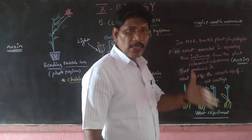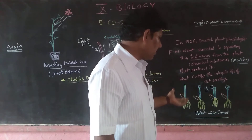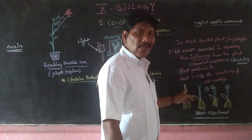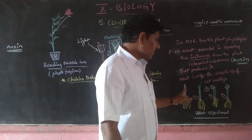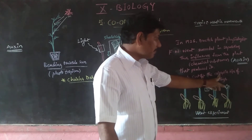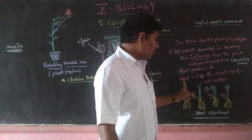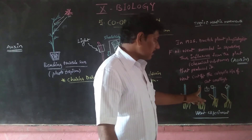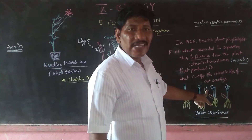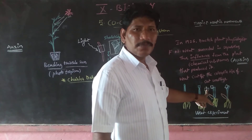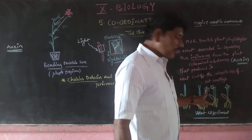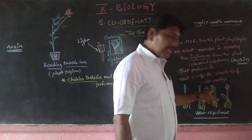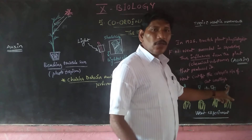How did Went come to identify auxin? He selected oat seedlings. The coleoptile is the tip of the oat seedling. Went cut off the coleoptile tips of oat seedlings. He then separated the tip and touched it to a chemical substance called agar-agar — a type of medium, like a Chinese grass. When this agar-agar was touched to the tip of the coleoptile, the coleoptile bent due to the chemical influence.